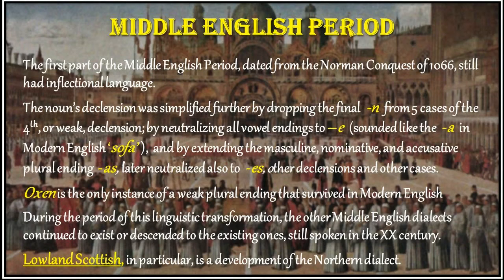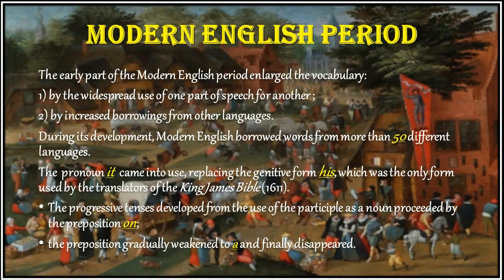Lowland Scottish, for example, is a development of the Northern dialect. The early part of the Modern English period enlarged the vocabulary by the widespread use of one part of speech for another and by increased borrowings from other languages. During its development, Modern English borrowed words from more than 50 different languages.